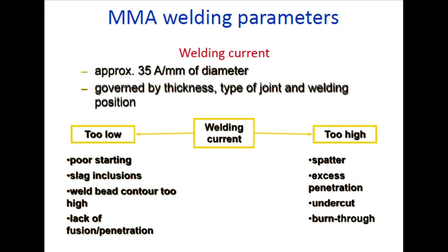Welding current is approximately 35 amperes per mm of electrode diameter, depending on material thickness, type of joint, and welding position. If welding current is too low: poor arc starting, slag inclusion, high bead contour, and lack of fusion. If welding current is too high: spatter, excess penetration, and undercut. Current has the most significant effect on penetration.